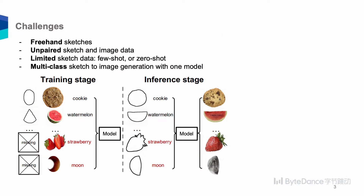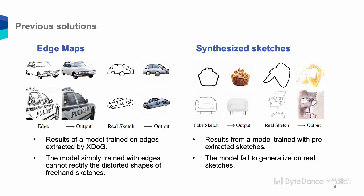This task is very challenging since we are using freehand sketches, and these sketches and images are unpaired. The sketch data is very limited — we can only get few-shot or zero-shot examples. We want to use one model to generate diverse classes of images given a label.